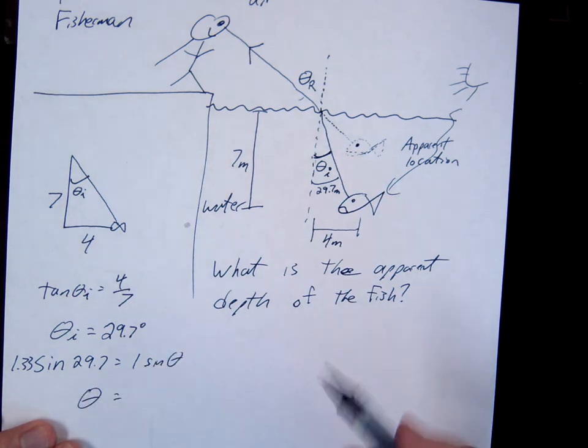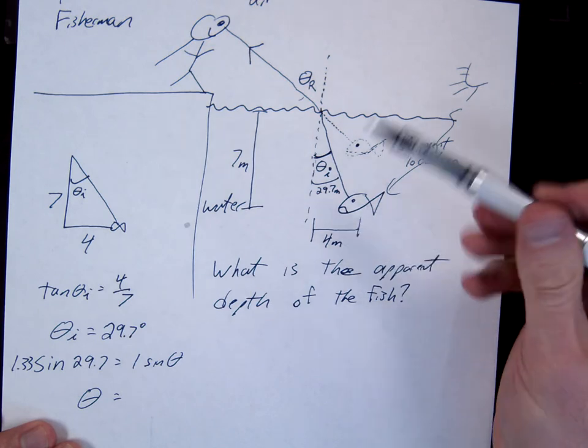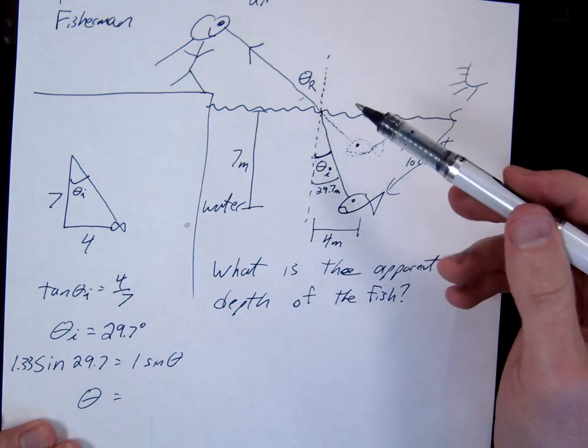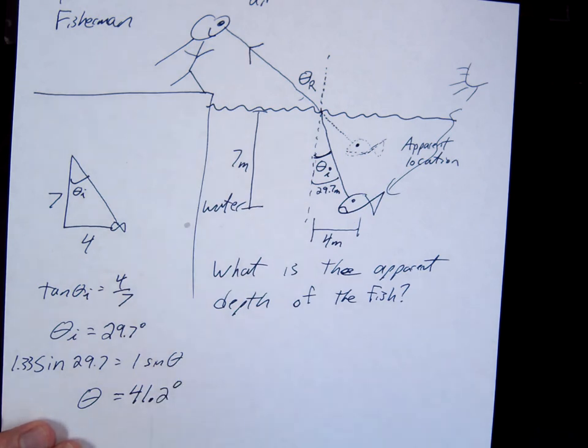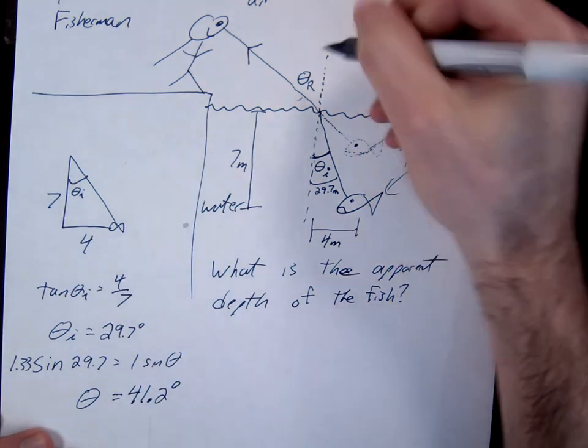According to my prediction, the angle should be increasing. Going from a large to a small index should increase. What's the answer? And sure enough, it does increase. This angle's right here.